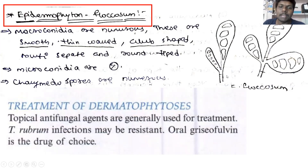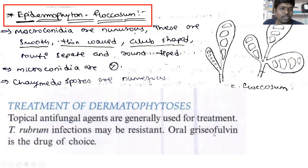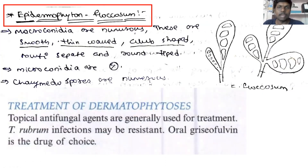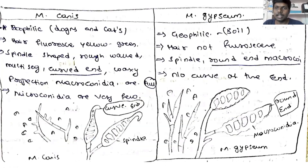Regarding treatment for dermatophytes, topical antifungal agents are generally used. T. rubrum infections may be resistant. Oral griseofulvin is the drug of choice — it is the best antifungal drug for dermatophytal skin infections.